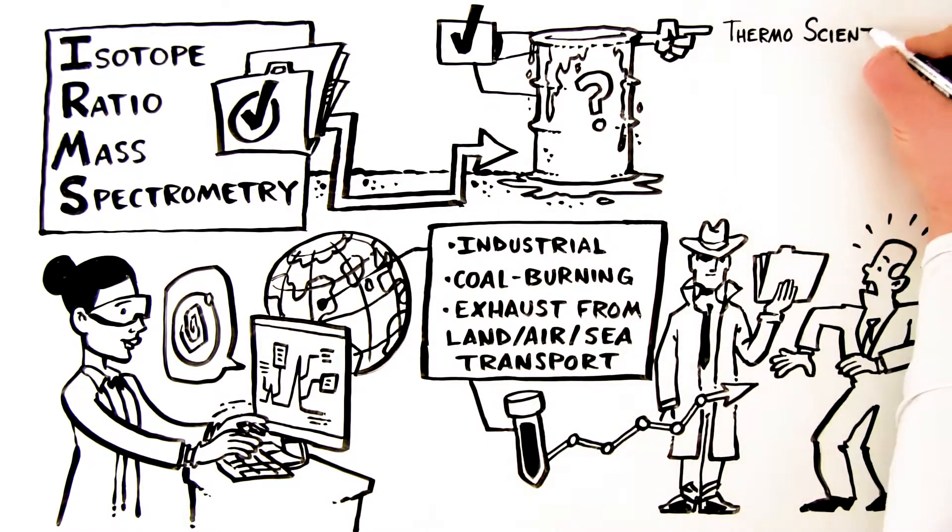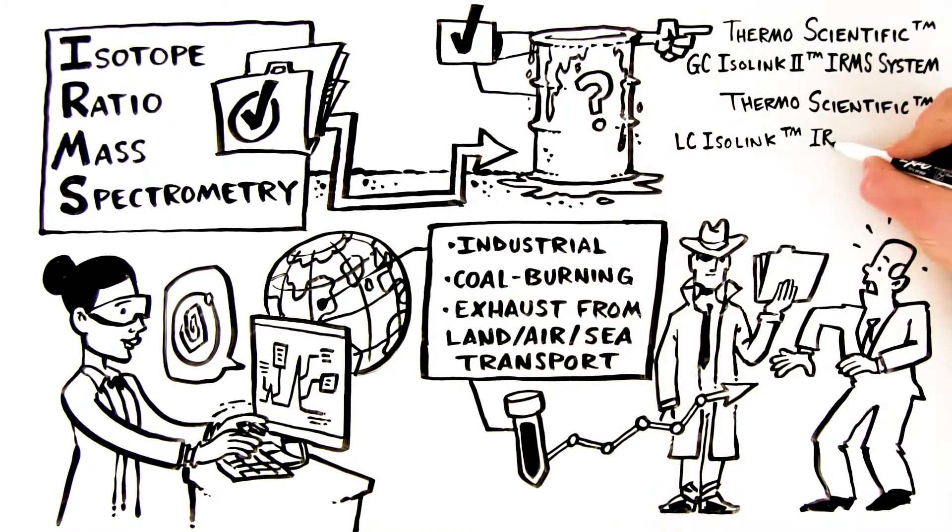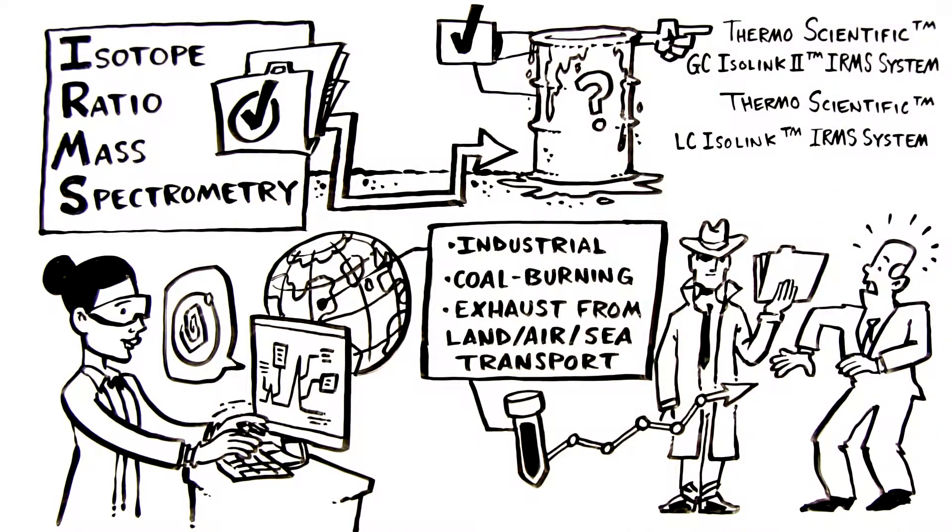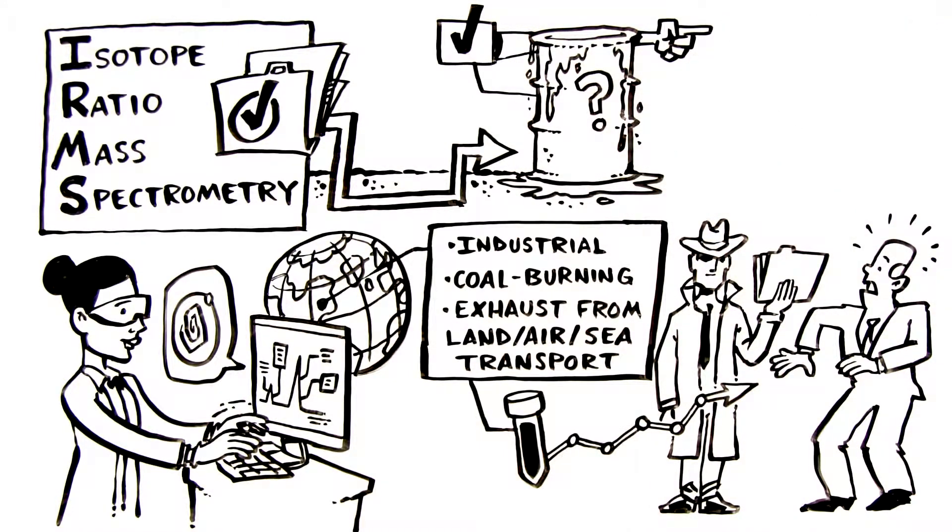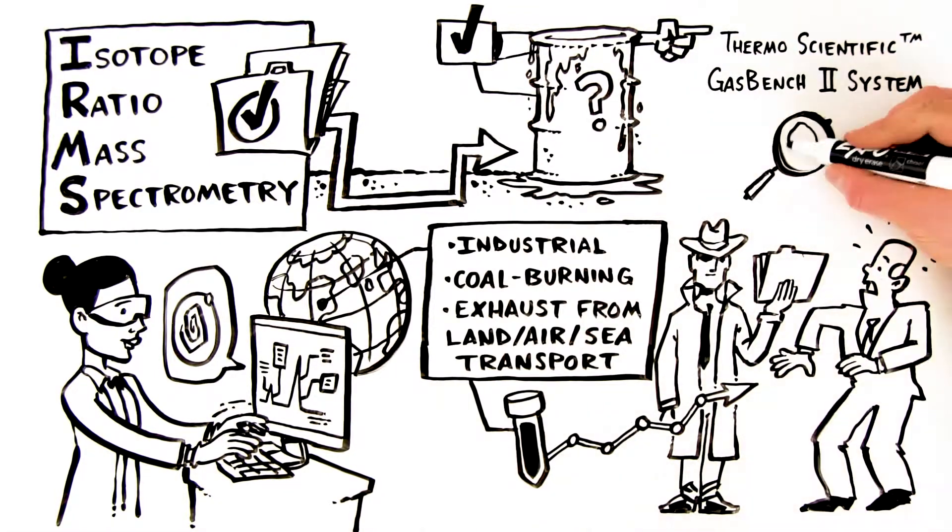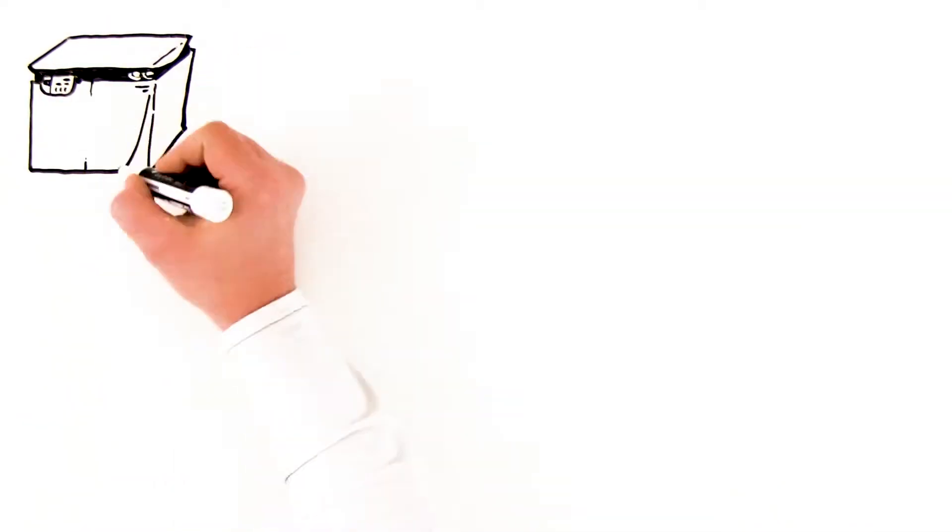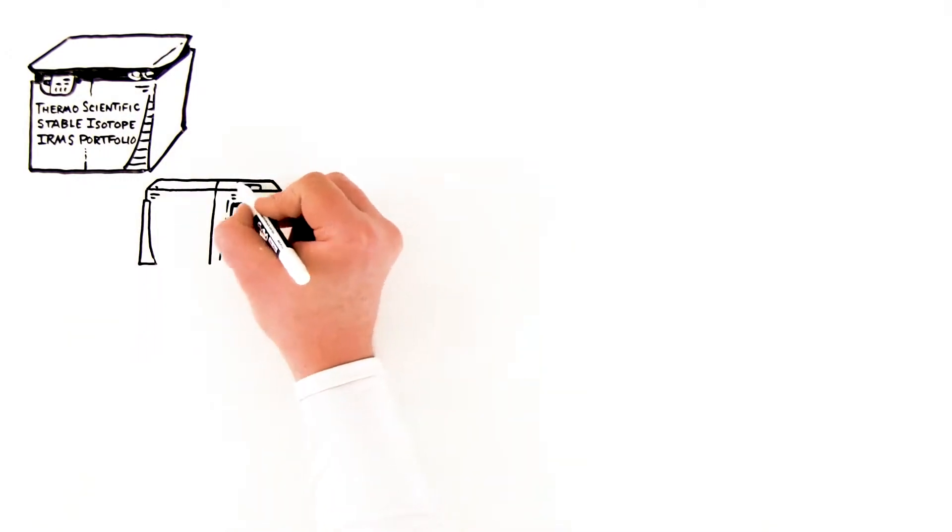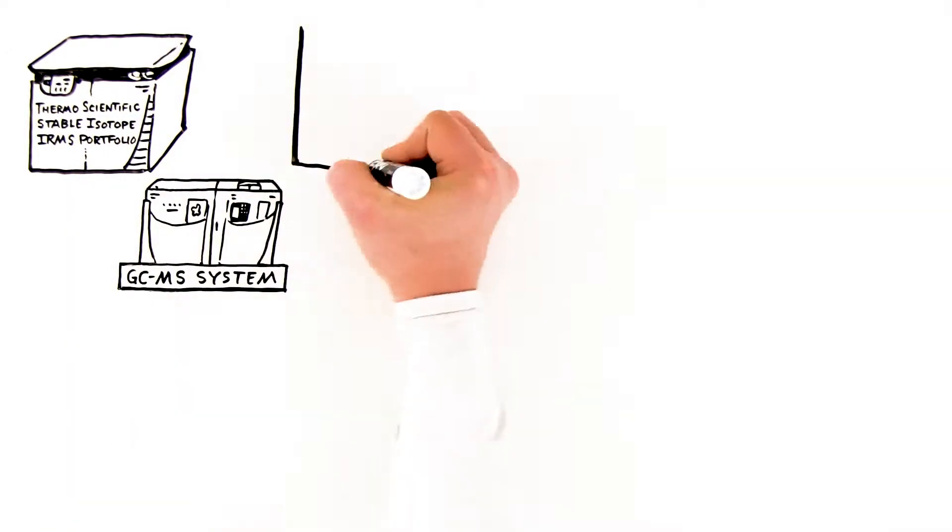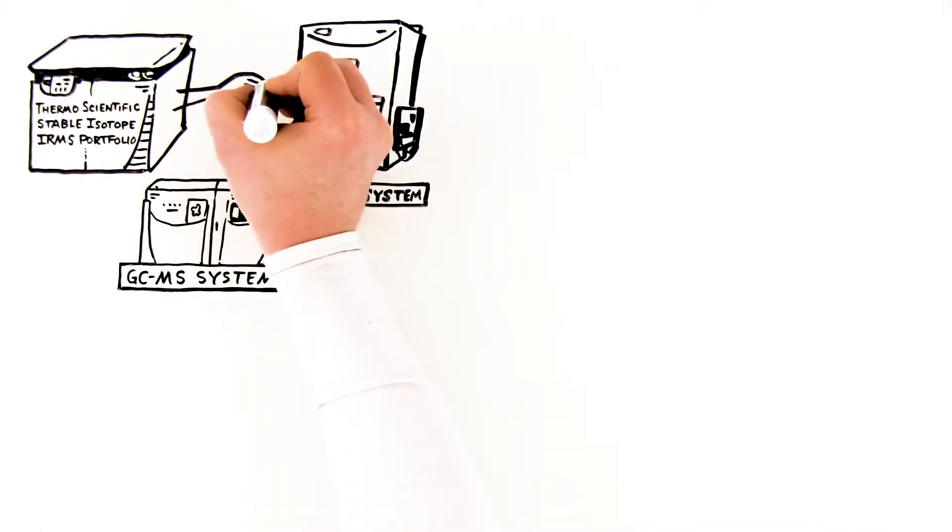The Thermo Scientific GC Isolink IRMS System or LC Isolink IRMS System for more specific analysis for the needles in the haystacks. And the Thermo Scientific Gas Bench System for analyzing gas samples. As part of a field-proven and robust analytical platform, the Thermo Scientific Stable Isolink IRMS portfolio extends the capabilities of your laboratory, even if you're already working with other techniques.